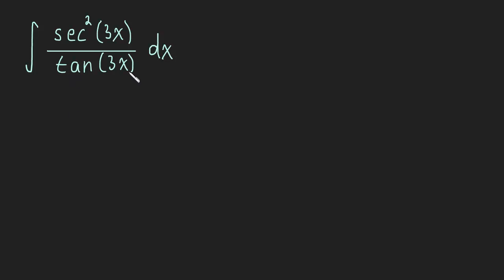Well, in the denominator, we have tangent. The derivative of tangent is secant squared. So we have a function and its derivative, so we know where to go with that.